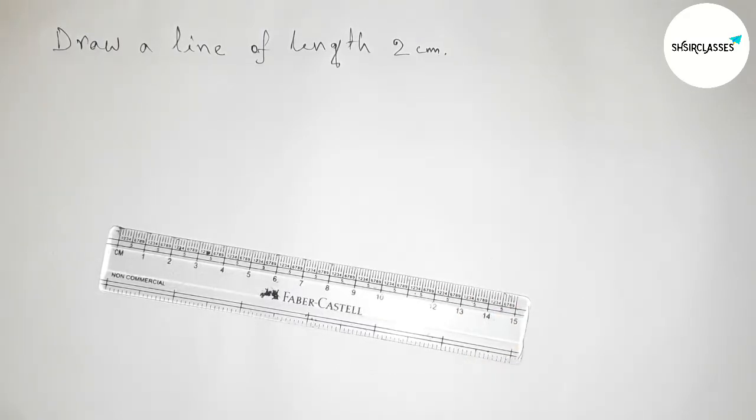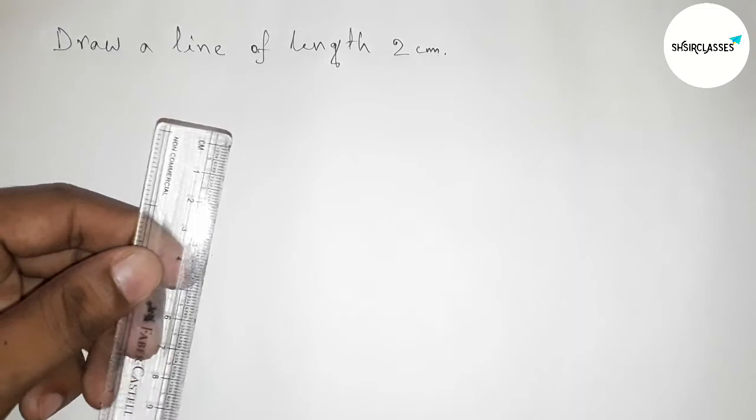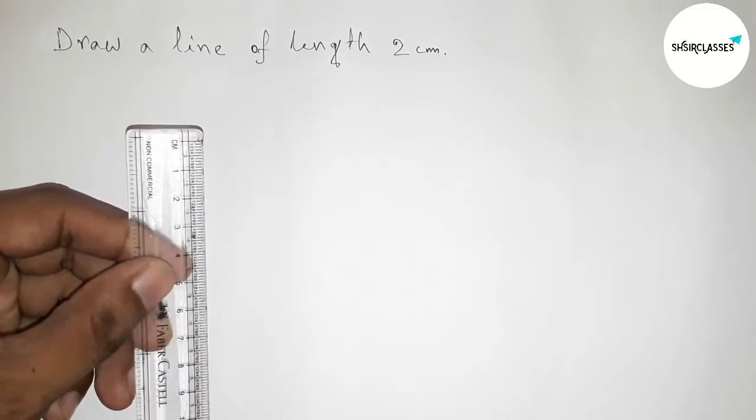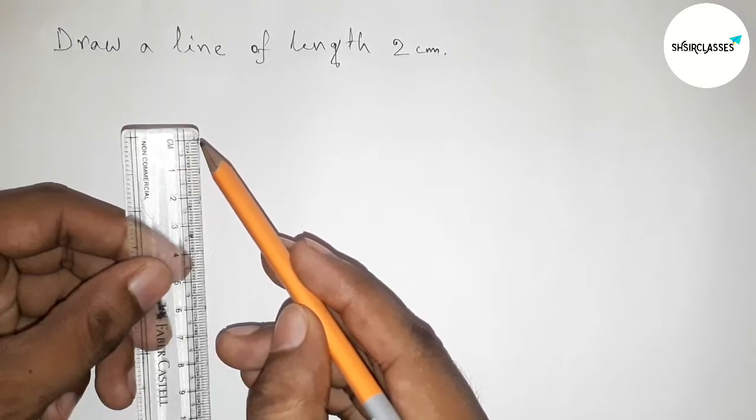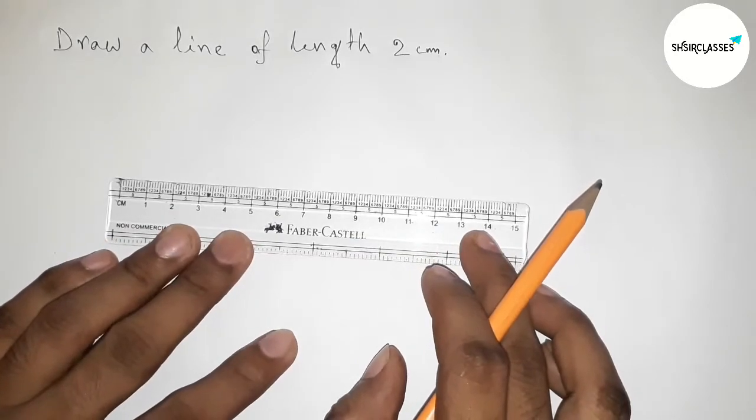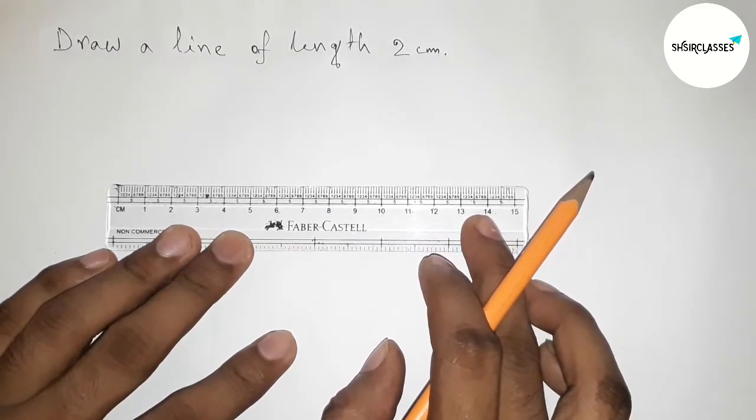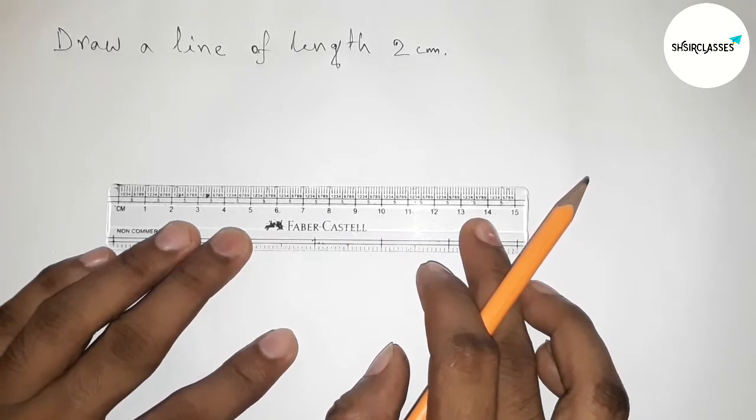First of all, I am going to use a scale and first measuring the length 2 centimeter by using scale. This is the starting here, 0, and this is 1, 2. Now first putting the scale straight by this way.